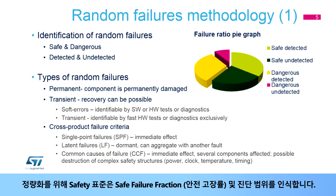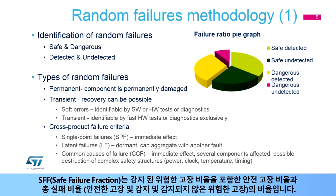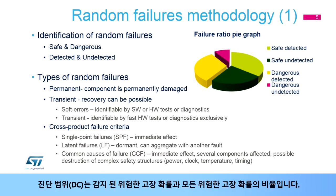For quantification purposes, safety standards recognize a safe failure fraction and diagnostic coverage. The safe failure fraction, or SFF, is the ratio of the rate of safe failures, including the rate of detected dangerous failures, to the total failure rate of safe failures as well as detected and undetected dangerous failures. The diagnostic coverage, or DC, is the ratio of the probability of detected dangerous failures to the probability of all dangerous failures.